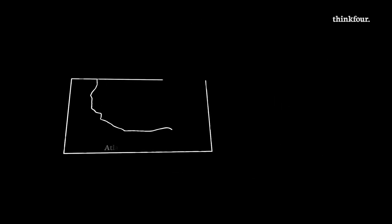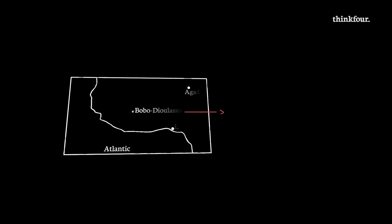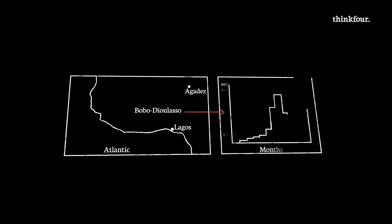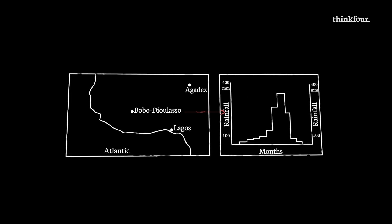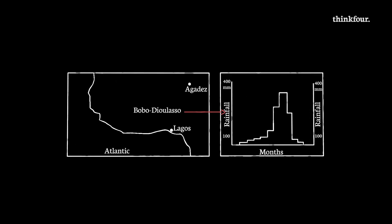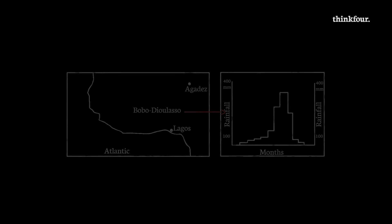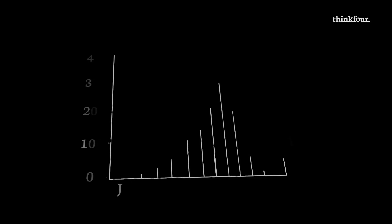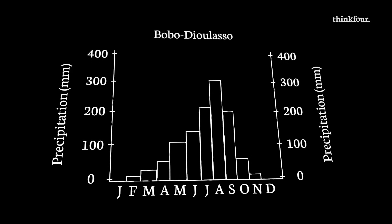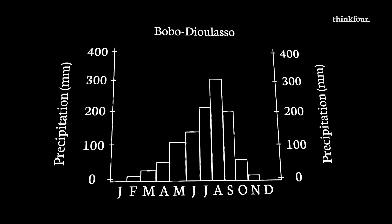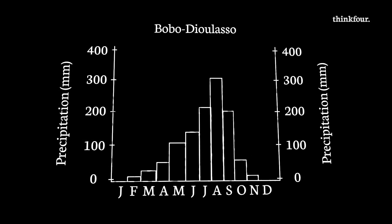Places situated more centrally, like Bobo-Dioulasso in Burkina Faso, have a clear wet and dry season, with large amounts of rainfall from June to August when the ITCZ is furthest north.